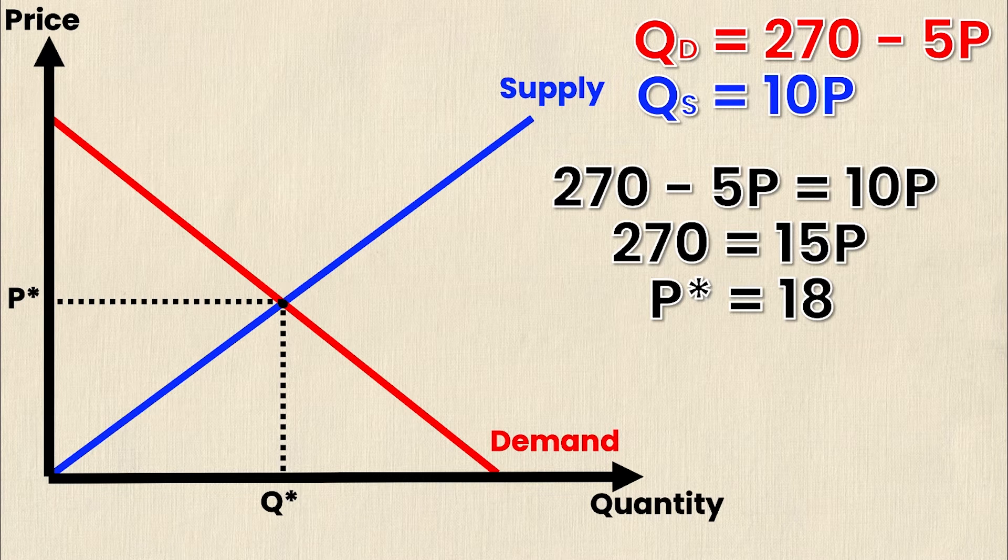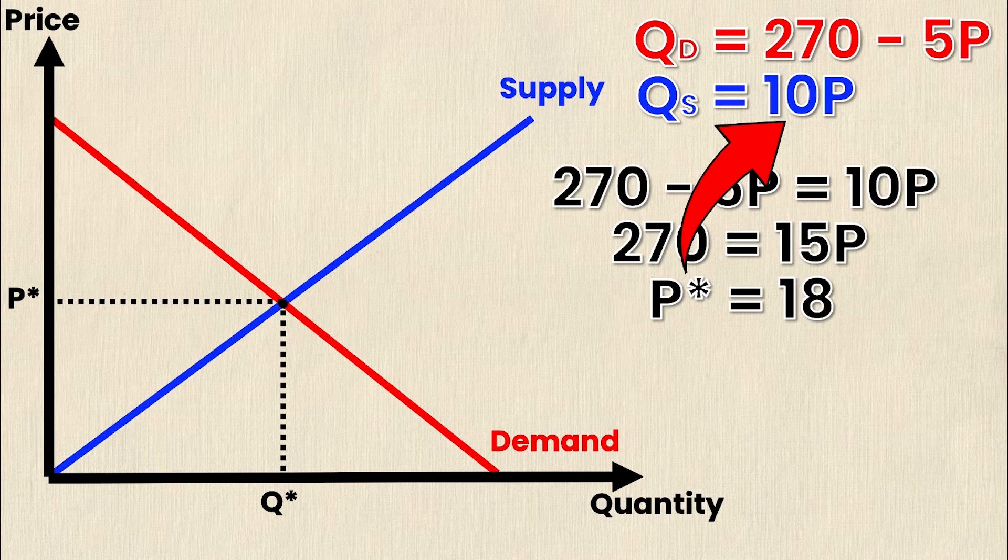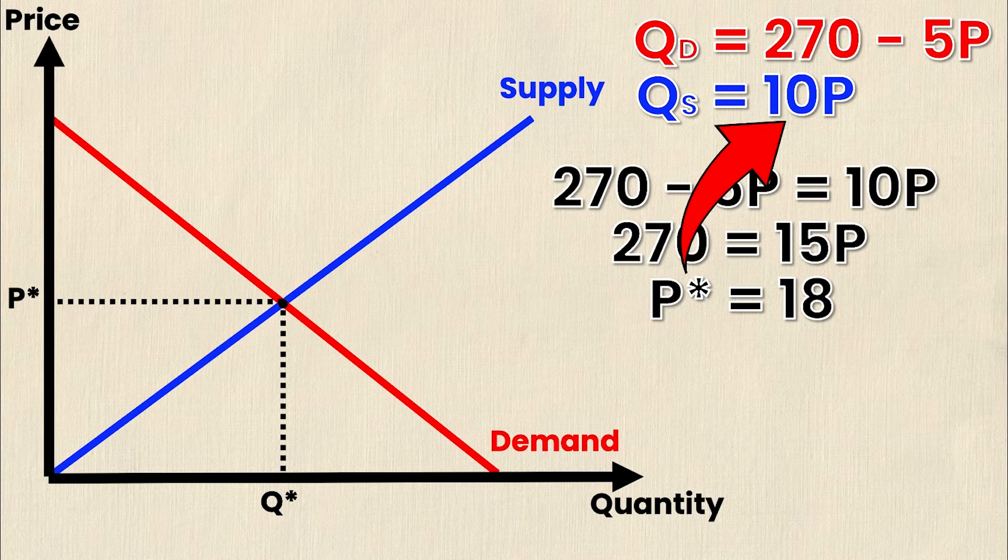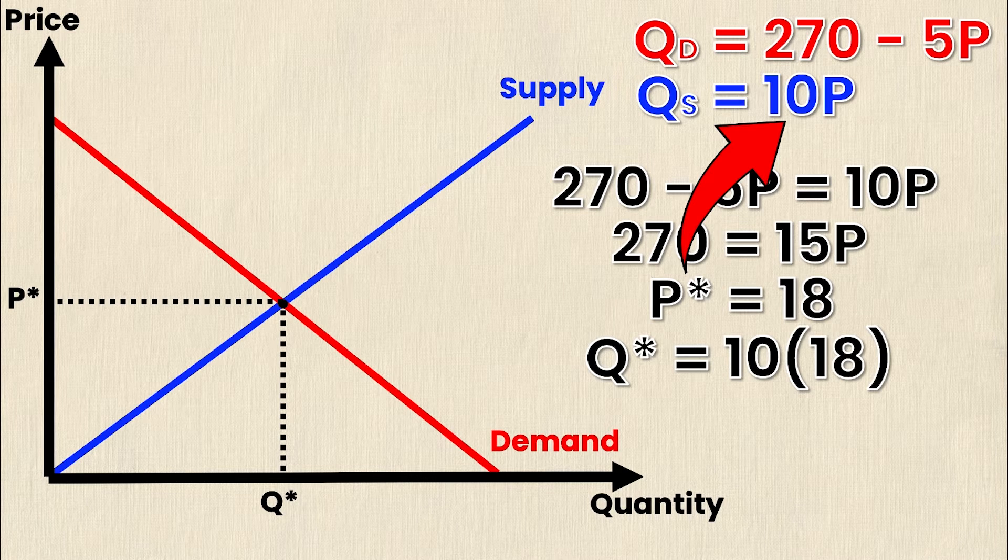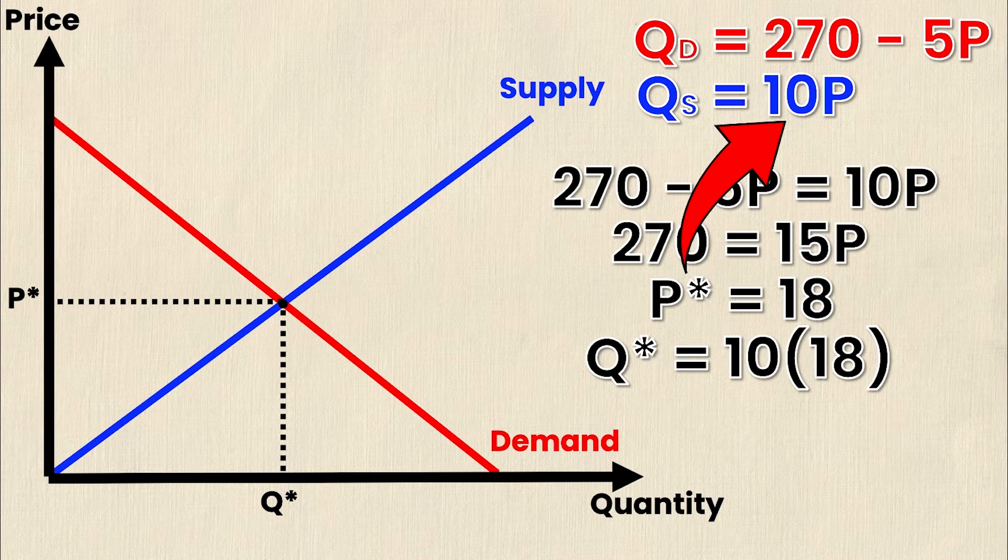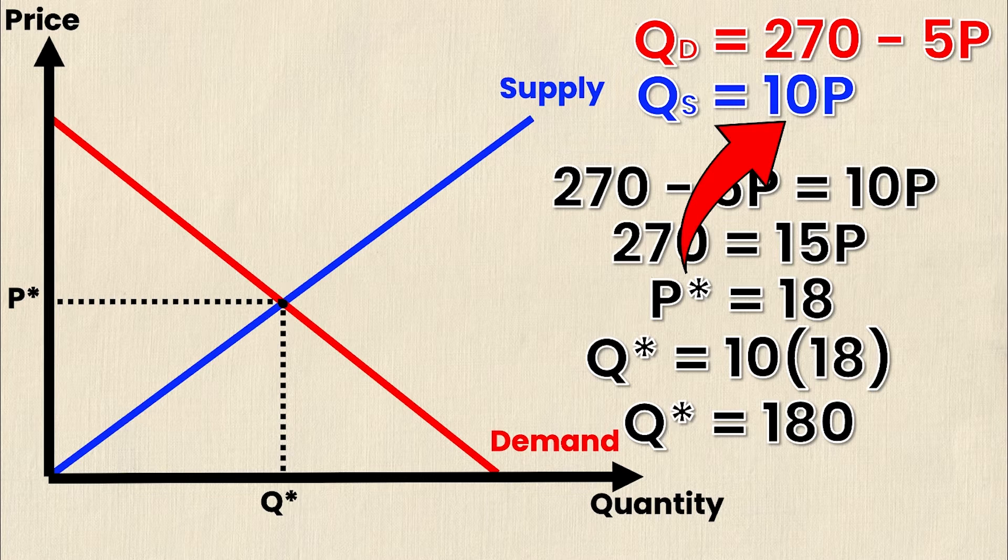Now that I have P star I can sub it into the quantity demanded or quantity supplied equation. I'm going to use the supply equation because it's significantly easier. However no matter which one I sub it into it's going to give me the same value for Q. So subbing it into the supply equation I get Q star or Q at equilibrium is equal to 10 times our new price which is 18. 10 times 18 is 180 and therefore I now have my Q star which is 180. P star is 18 and Q star is 180.